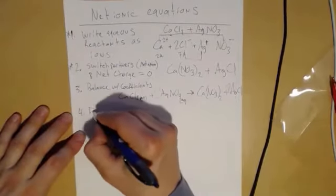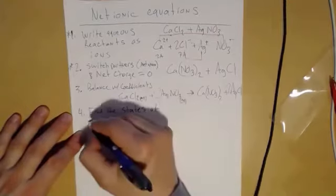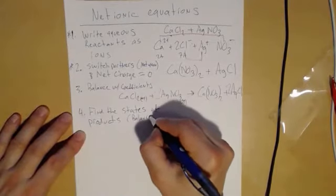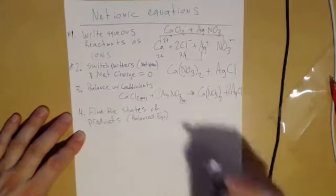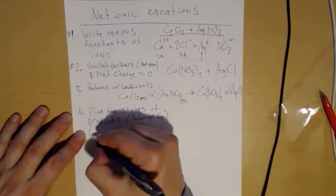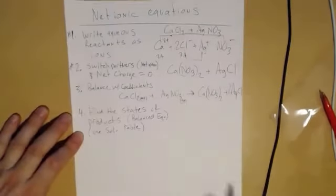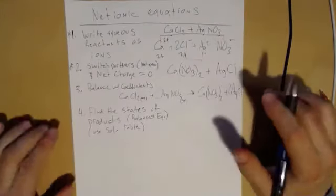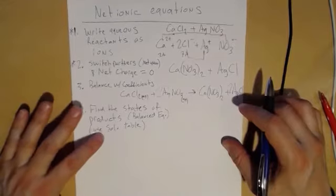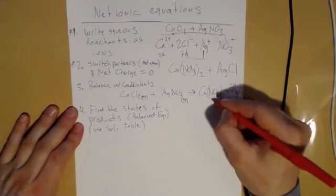I'm going to find the states of the products and when I've done that, I have a balanced equation, right? And so, and also we should note that you're going to use a solubility table. In the video lectures, I talked about other cases like an acid-base neutralization and a gas forming, but we've really ignored that for the lab. So for this lab, you're going to use a solubility table.